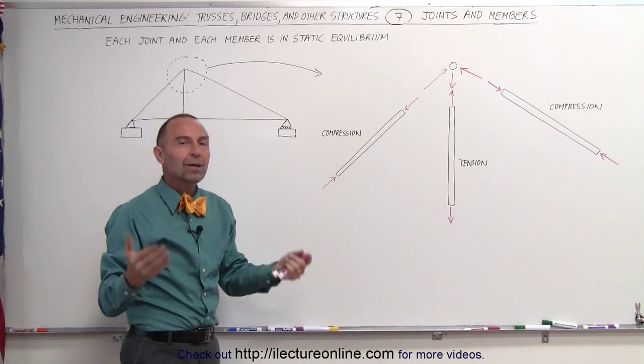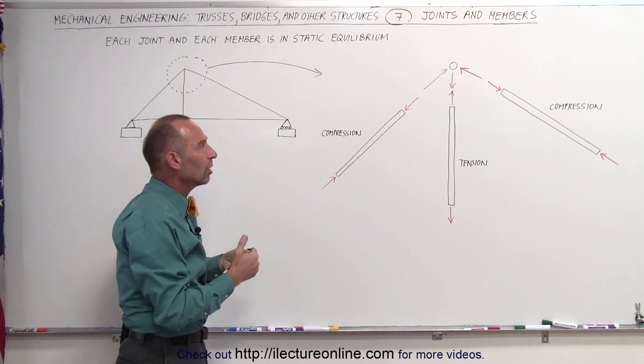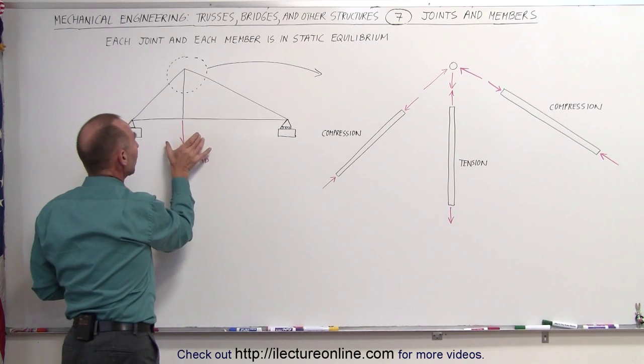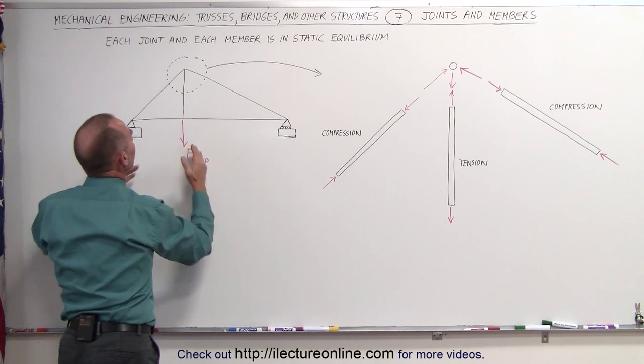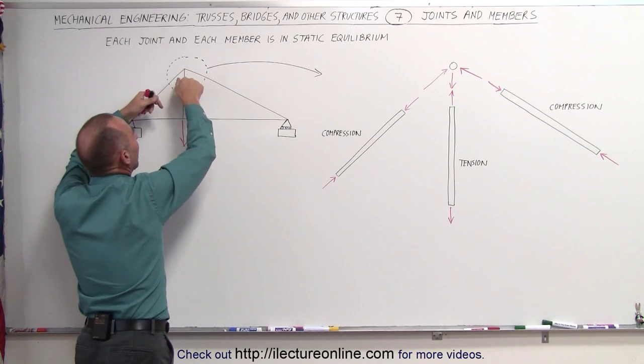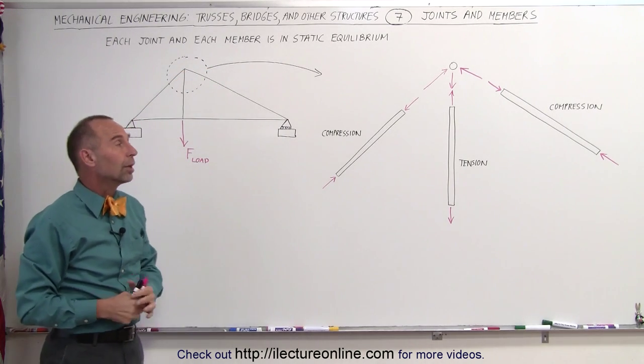It's always a network of beams under compression and beams under tension in such a way that very large forces can be withstood. In this case, you can put a lot of load on here, and that load is transferred to the compression of these two beams, which prevent this beam from being pulled downward. That's how trusses work.